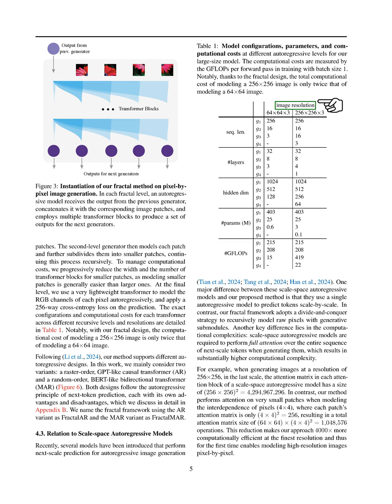In relation to scale-space autoregressive models, while these models predict tokens scale by scale using a single autoregressive model, our fractal framework employs a divide-and-conquer strategy to recursively model raw pixels with generative modules. This leads to a significant difference in computational complexity. For instance, generating a 256-by-256 image requires a massive attention matrix in scale-space models, while our method focuses on small patches, resulting in a much smaller attention matrix and making our approach significantly more efficient.